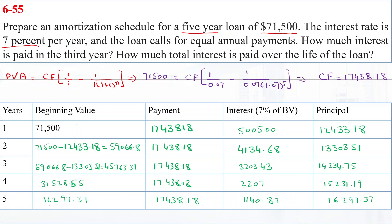To answer the questions: in the third year, we paid interest of $3,203.43. For the total interest paid over the life of the loan, we sum the interest from all five years to get $15,690.92. The total principal paid sums to $71,500, and the total of all payments made is $87,190.92.